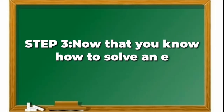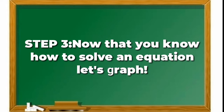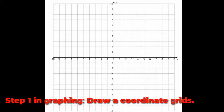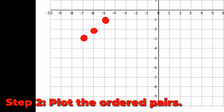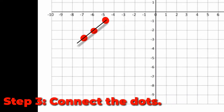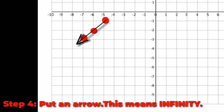Step 3. Now that you know how to solve an equation, let's graph! Step 1 in graphing: draw a coordinate grid. Step 2: plot the ordered pairs. Step 3: connect the dots. Step 4: put an arrow — this means infinity.